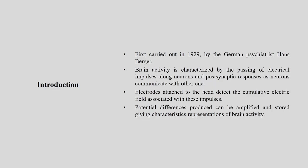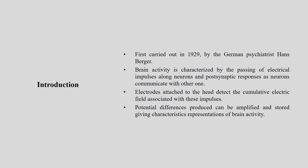Electrodes attached to the head detect the cumulative electrical field associated with these impulses. The potential differences produced can be amplified — because the signals are very small, we need to amplify them. After amplification and storage, these give characteristic representations of brain activity, allowing us to understand what the brain is thinking, what parts are active, and what decisions are being made.